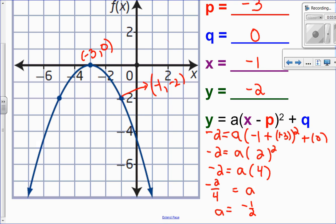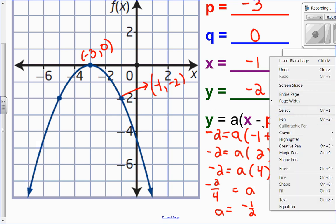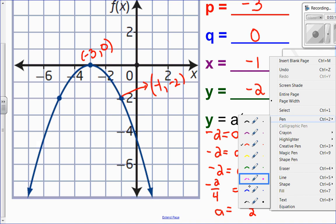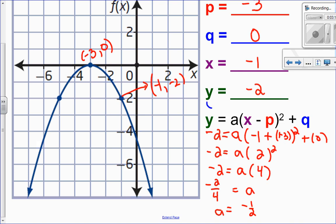So what I can do now is plug in my A, P, and Q values to come up with my equation. So my equation is leave Y and X in general. So Y is equal to negative 1 half X minus a negative 3 is really positive 3, squared, plus Q, which is just 0. So this would be my final equation here.